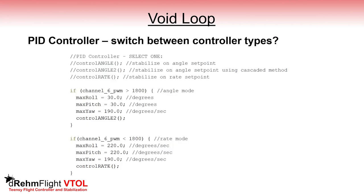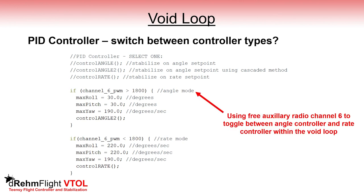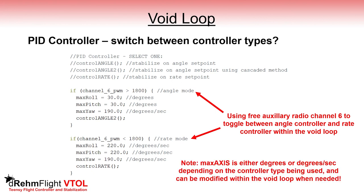You can only use one controller type at a time, but this doesn't stop you from changing between them in flight. Here I've set up a simple conditional statement monitoring the channel 6 PWM variable to toggle between an angle controller and the rate controller. I also modify the max roll, pitch, and yaw variables each time I change so that I can have different maximum angles or rates. This is just a quick example of how you can modify the code to do what you want.